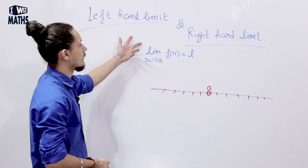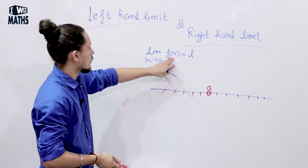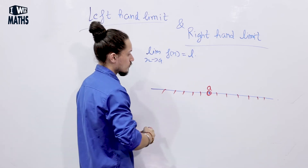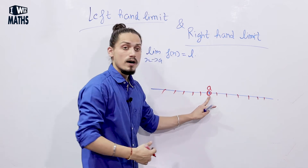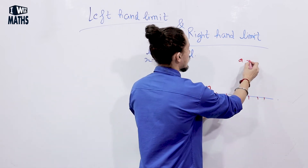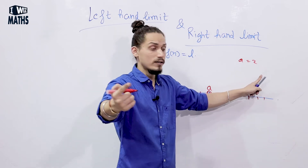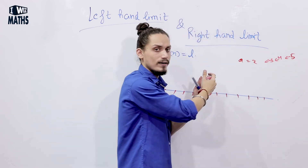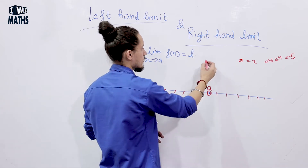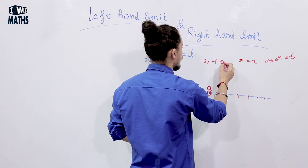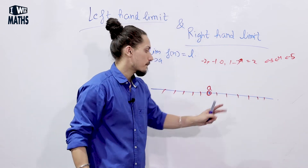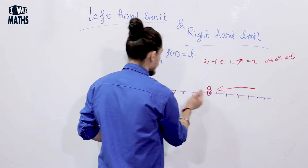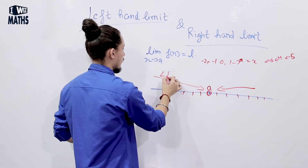Now let's look at left hand limit and right hand limit. If a function's limit is L as x approaches a, on the number line we can approach 'a' from the higher value side — say from 5, 4, 3 toward 2 — or from the lower value side — say from -2, -1, 0, 1. There are two ways to approach 'a': from the higher value or right hand side, or from the lower value or left hand side.